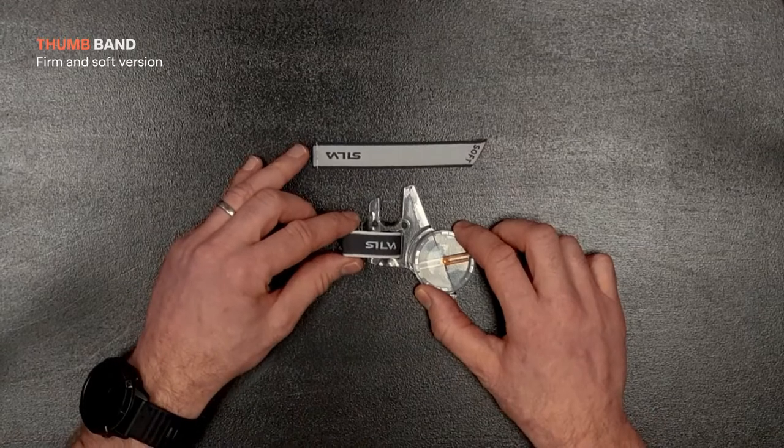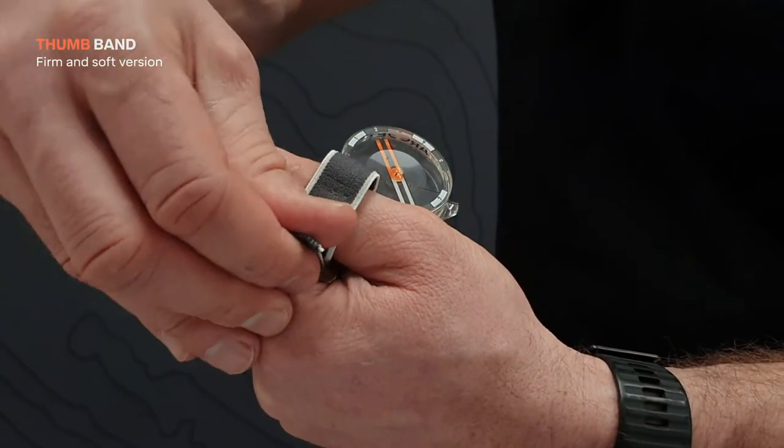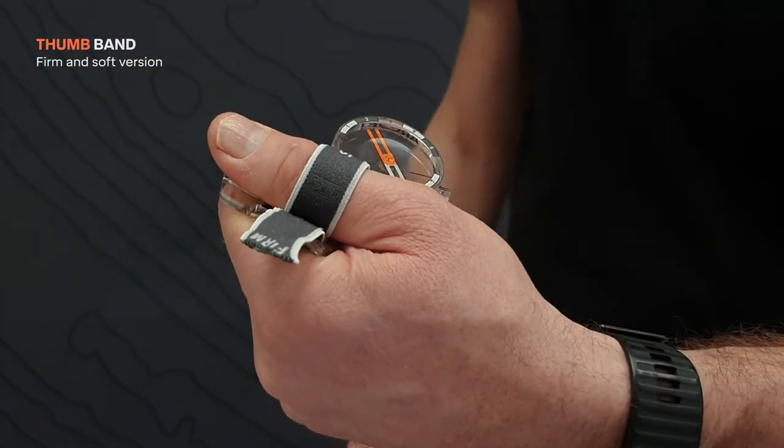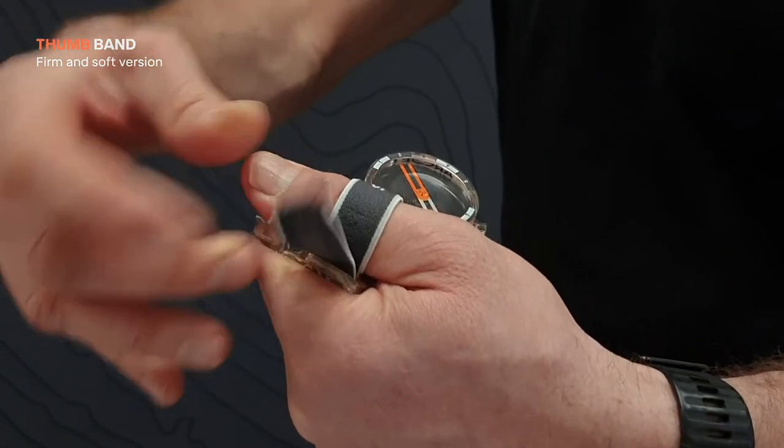The thumb band comes in both firm and soft versions. It is easy to adjust and makes the compass fit comfortably in your hand. The thumb band has silicone on the inside and it will not become loose while running.